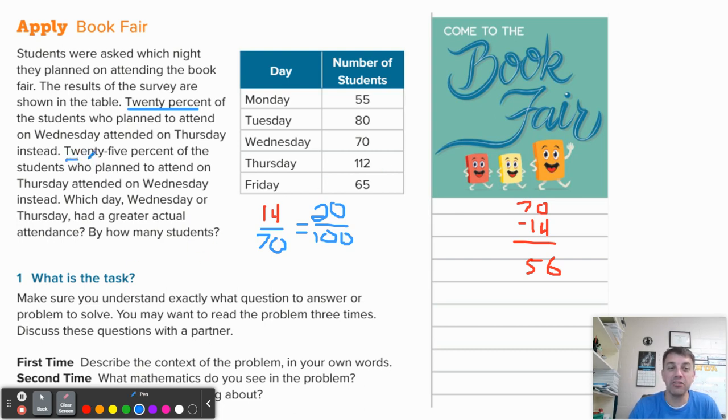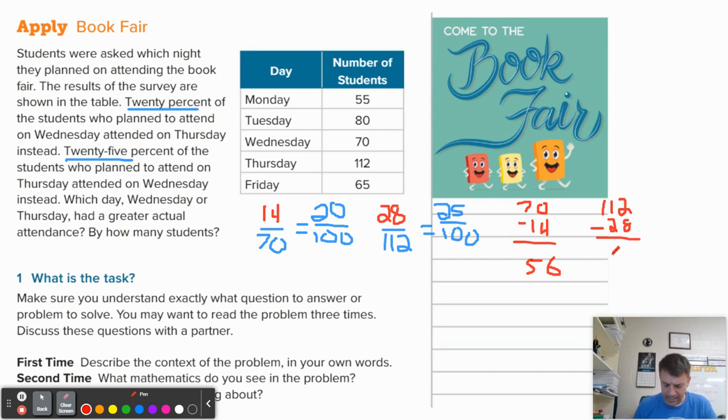I say that because 25% of students who attended on Thursday decided not to go on Thursday. So let's set up this table as well, or this equivalent ratios, except now we have 25%. So essentially we're looking for one fourth of 112. So 25% of 112 is 28. Now, here's where I start to lose some of you because I'm going to write down two separate numbers over here. We have 112 minus 28, which I can't do in my head for some reason. 112 minus 28 is 84.